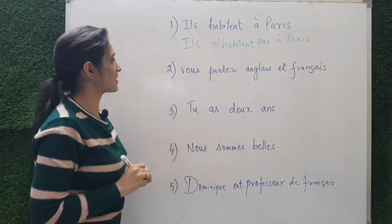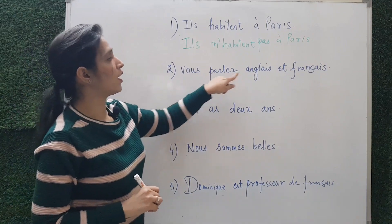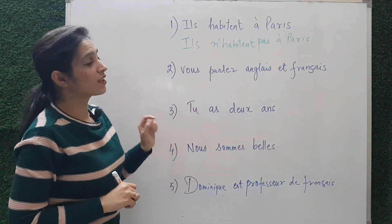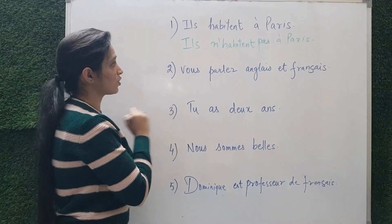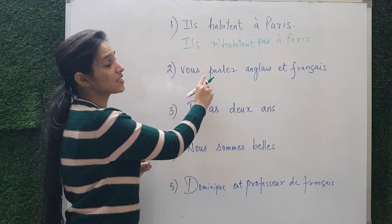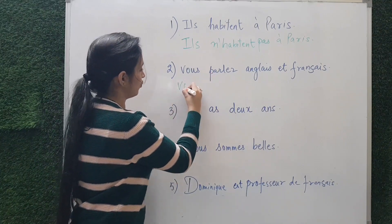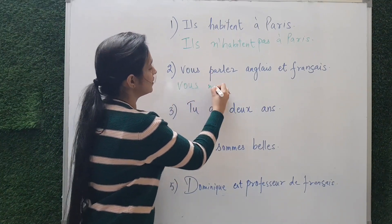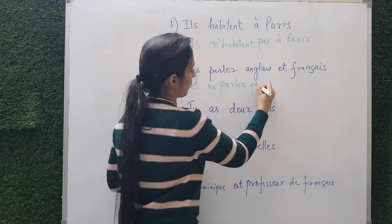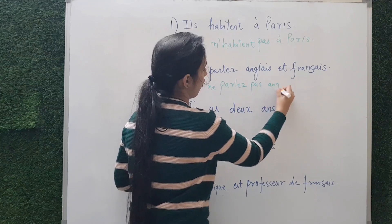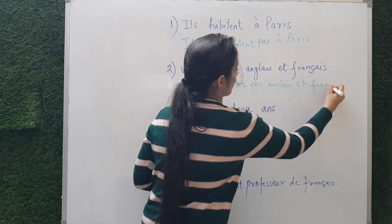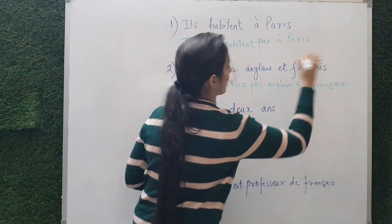Next: 'Vous parlez anglais et français' — 'You speak English and French.' The verb is 'parlez,' so before and after the verb we put 'ne' and 'pas.' The negative form is 'Vous ne parlez pas anglais et français.'